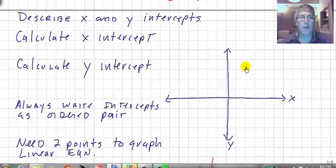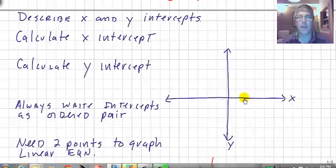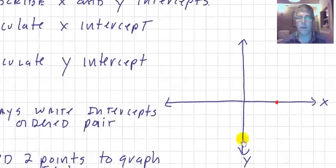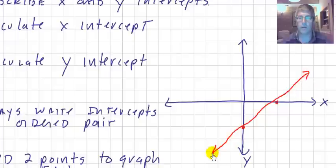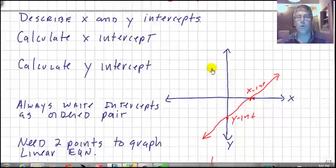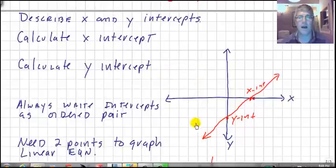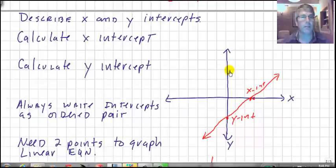When we graph a linear equation, generally there's going to be an x-intercept and a y-intercept. The x and y intercepts for a line are the locations where our graph or line intercepts the x-axis or the y-axis. It's possible for a line to pass through the x-axis and never touch the y-axis, and we could also have a horizontal line that hits the y-axis, so it has a y-intercept but does not have an x-intercept.